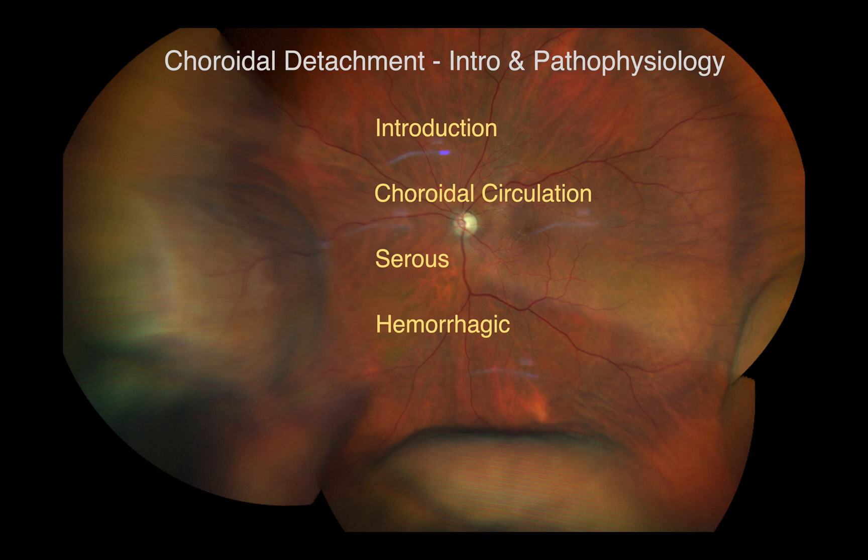In summary, I introduced the condition called choroidal detachment and revealed the mechanisms by which fluid, whether serous or blood, accumulates in the suprachoroidal space. I hope you enjoyed the video. See you next time.